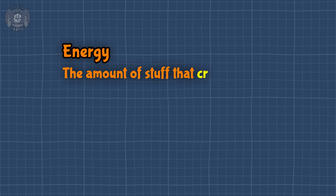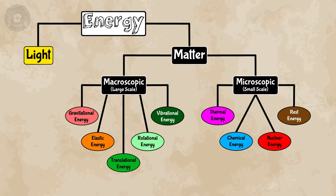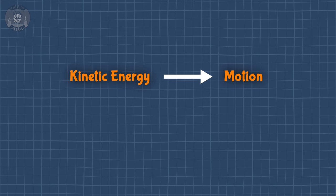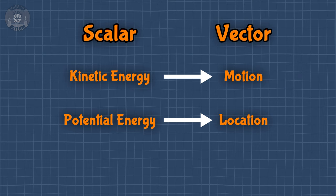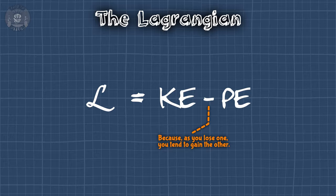Forces aren't going to help us with that — we're going to need energy and work. In simplest terms, energy is the amount of stuff that could happen, and work is the amount of stuff that does happen. As far as Lagrange was concerned, it was just a useful quantity without a direction — something we'd call a scalar quantity. We wouldn't find meaning in it or even call it energy until the 1800s. We're aware of a lot of different types of energy, but they can be organized into two major categories: kinetic energy and potential energy. Kinetic energy is associated with motion and potential energy with location. Lagrange took both major categories — kinetic and potential — and combined them into a single quantity we now call the Lagrangian.